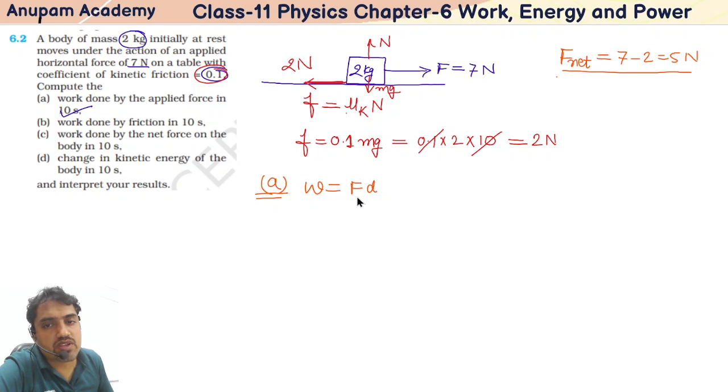Work done, you know very well, is equal to force into displacement in the direction of force. So F into d. But how to find this d? To find this d, because it is starting from rest, you can use formula d equals ut plus half at squared.